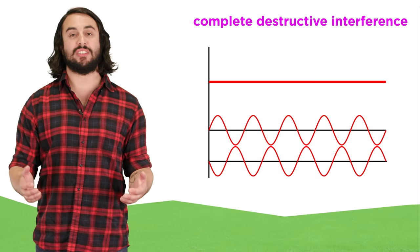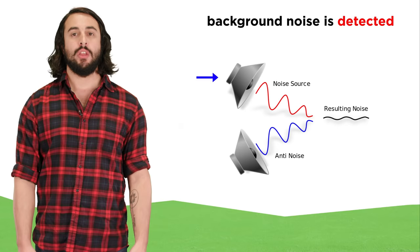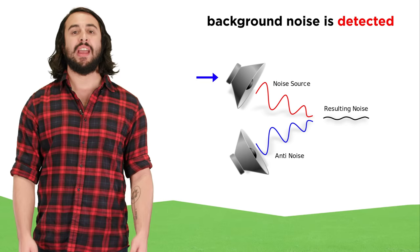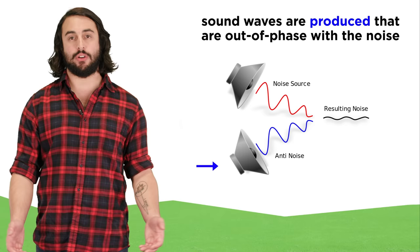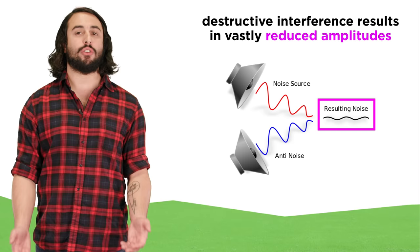This is what noise cancellation headphones do. Small microphones detect background noise and process the associated signal, and then reproduce this noise in a way that is precisely out of phase with the signal. The resulting destructive interference results in zero, or at least dramatically reduced sound waves reaching your ears.